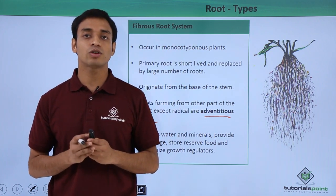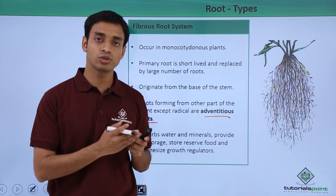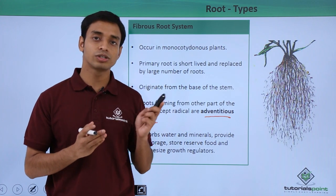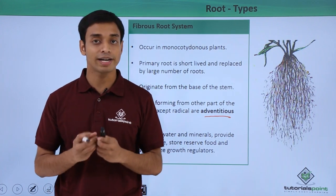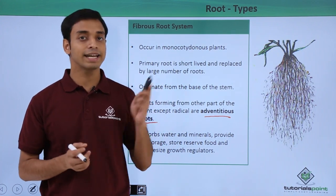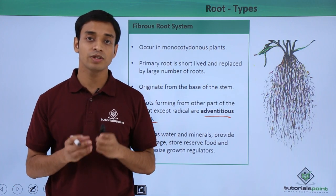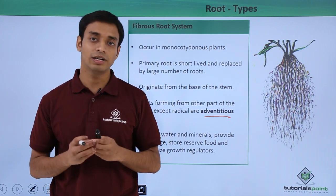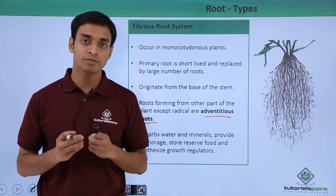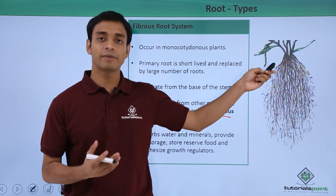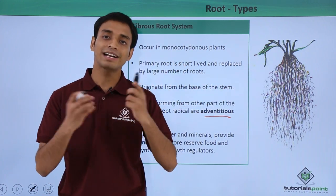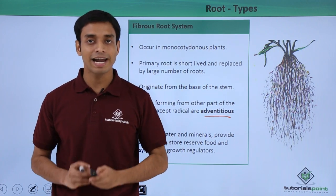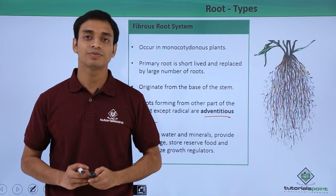The functions of these roots include absorbing water and minerals, providing anchorage, storing food, and synthesizing growth regulators essential for root growth. In summary, we discussed two root types: the tap root system arising from the radicle, and the fibrous/adventitious root system where the primary root does not survive long and is replaced by many smaller roots.